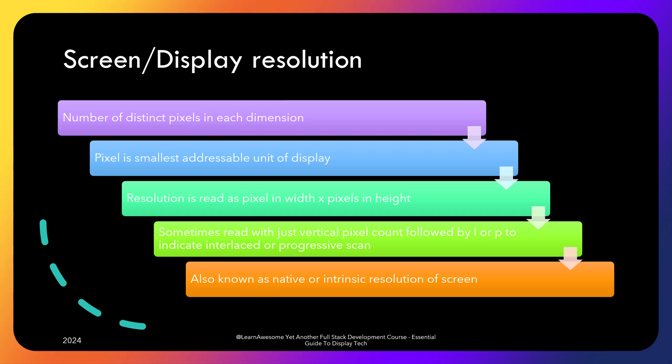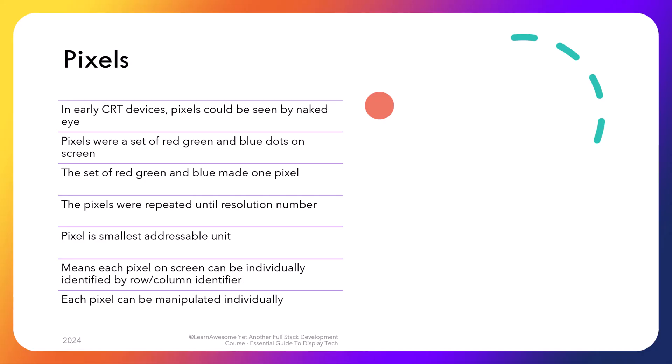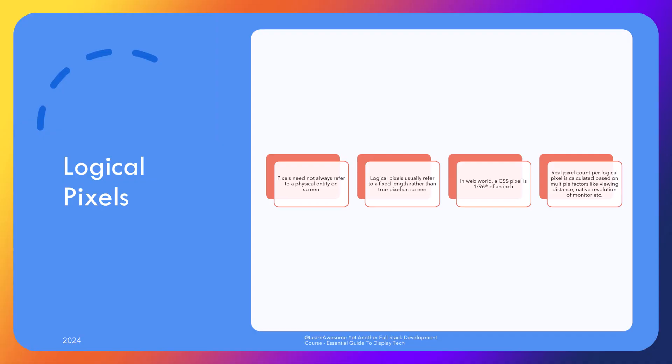These are generally known as native or intrinsic resolutions of the screen. In early devices like color CRT monitors, those with good eyesight could even see the individual pixels on screen as a combination of three red, green, and blue lines repeating endlessly — not endlessly, but to a finite number of rows and columns. When we say addressable unit, it means each RGB pair can be individually identified by row and column index and its brightness controlled, and thus color manipulated individually for each pixel. Pixels do not always refer to physical entities on the screen. Logical pixels also exist, which help content developers use the term as a reference size, referring to a fixed reference length rather than a true pixel on screen.